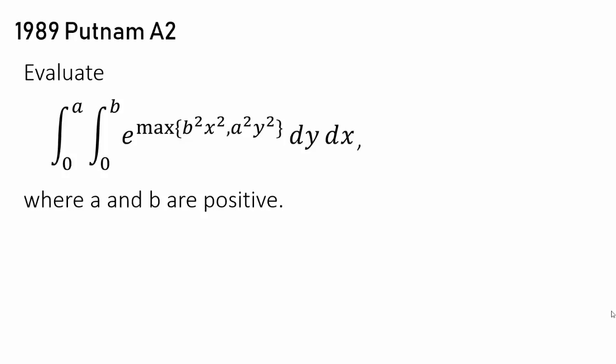Another integration question from the Putnam competition. We want to evaluate a double integral going from x equals 0 to a, and y equals 0 to b, of e raised to the maximum value of b squared x squared or a squared y squared.